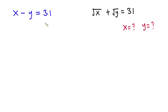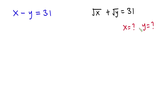Hello everyone. In this video we have these nice equations. We have x minus y is equal to 31. Then square root of x plus square root of y is also equal to 31. And we have to find the values of x and y.